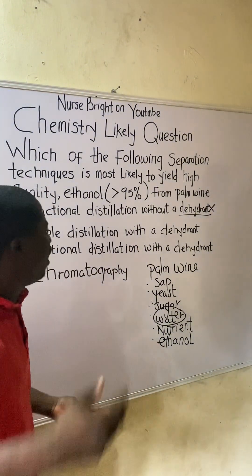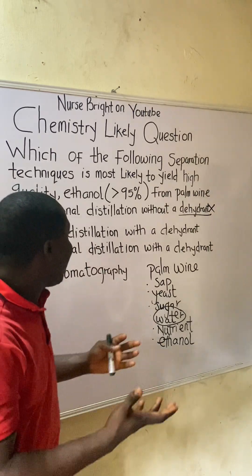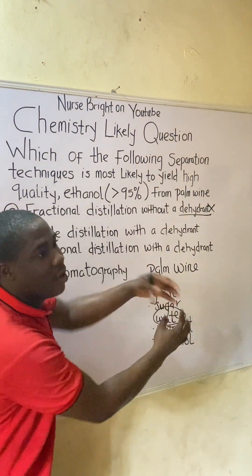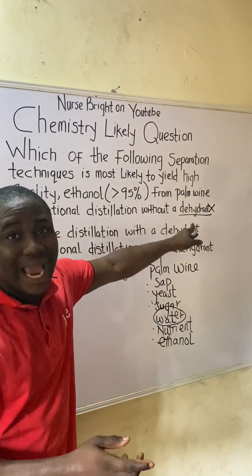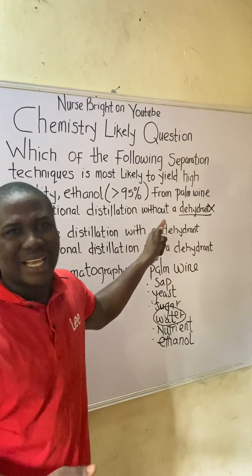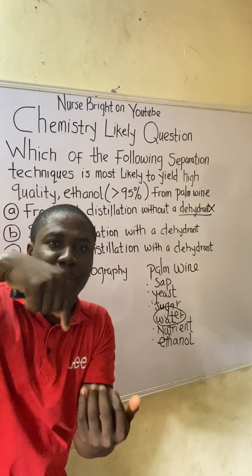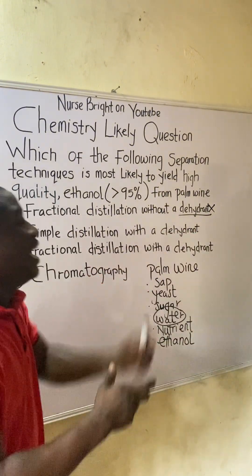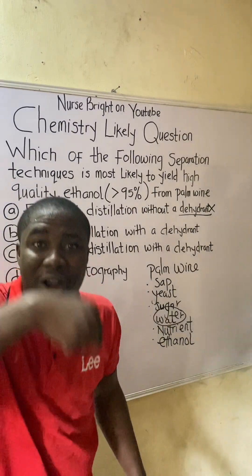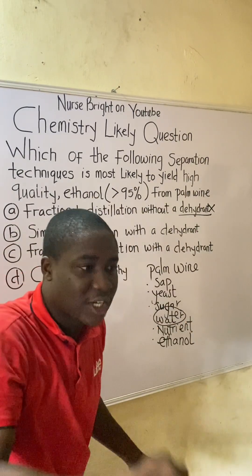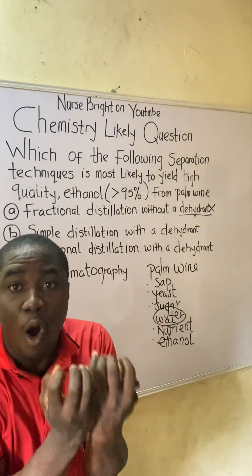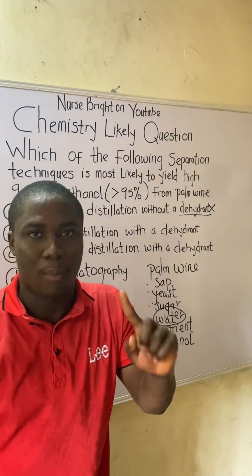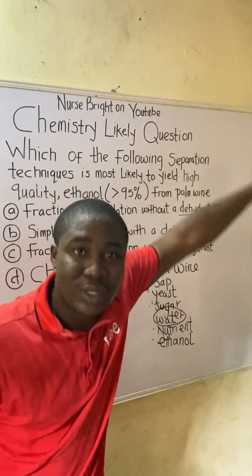Option B is simple distillation with a dehydrant. Yes, there is a dehydrant, but this is still not the best option. When it comes to the effectiveness of separating liquids based on difference in boiling point, fractional distillation is better than simple distillation, because fractional distillation has a fractionating column whereas simple distillation does not.